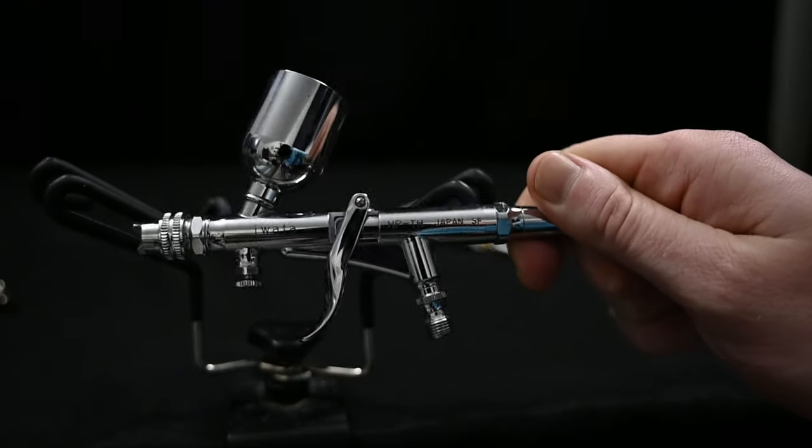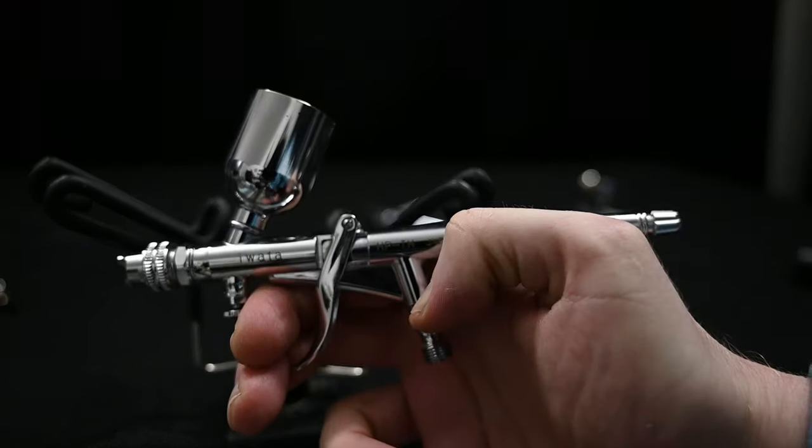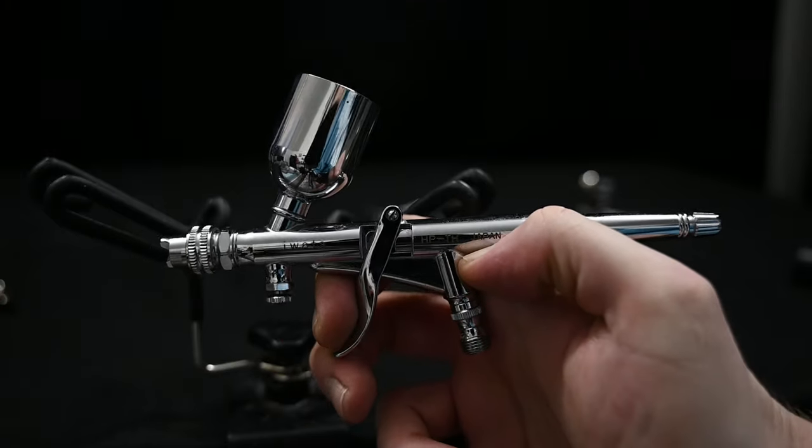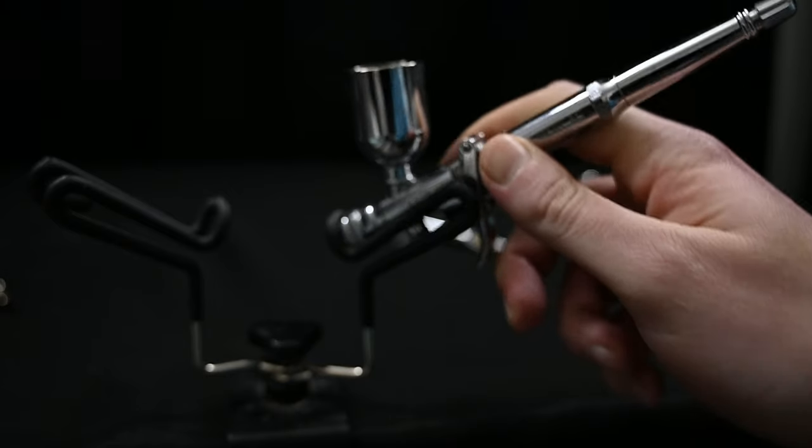If we look at this airbrush, the Iwata TH, this is like a worst-case scenario. It's a very large airbrush with a large cup. It has a MAC valve, and it has the trigger at the bottom. And this one fits in just like every other airbrush.